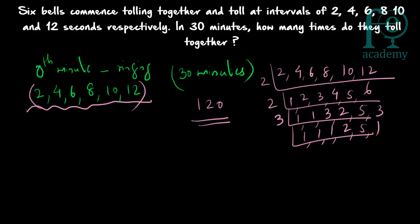120 seconds equals 2 minutes, so every 2 minutes all the bells will be ringing together. After every 2 minutes, all 6 bells will ring together. So how many 2-minute intervals are there in 30 minutes? 30 divided by 2 equals 15. And at the 0th minute they are also ringing together.